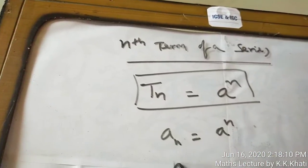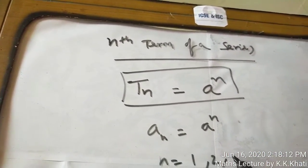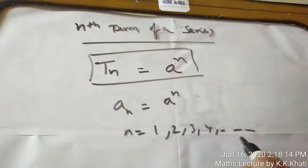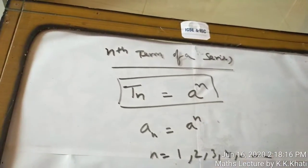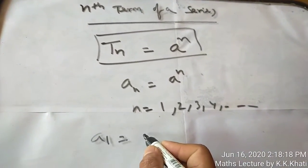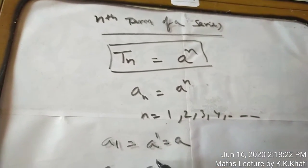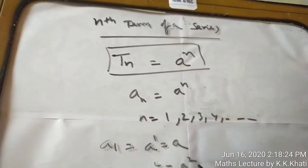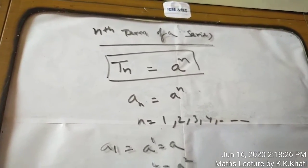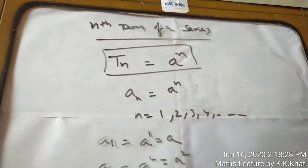To develop the series, we put n equals 1, 2, 3, 4 and so on. So a1 will be a to the power 1, which is a. Then a2 is a to the power 2, which is a square. A to the power 3 is a cube, and this way the series continues.